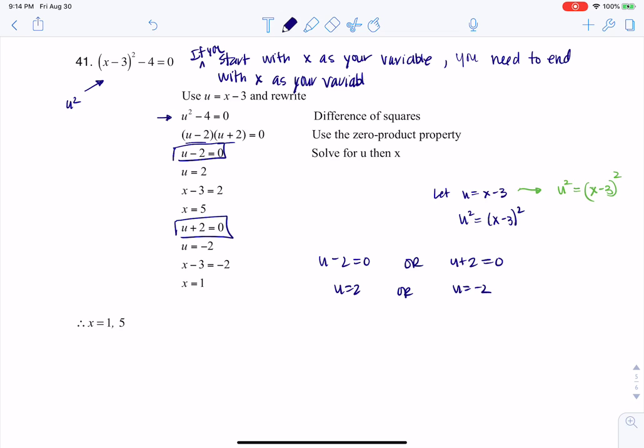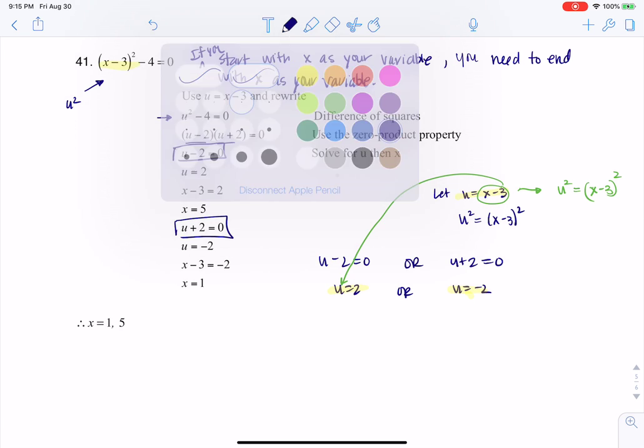So where I'm not done with this problem is I did start with x as my variable, but I'm only at u's. I've solved for u, but that's not enough I need to solve for x. The good thing is we do know what u is equal to in terms of x, so I'm going to substitute that. So what I'm going to do is I'm going to take x minus 3 right here, and I'm going to drop it in for u. So I'm going to back sub this.